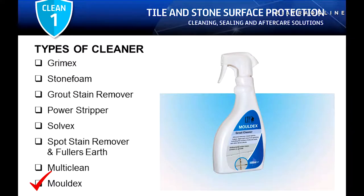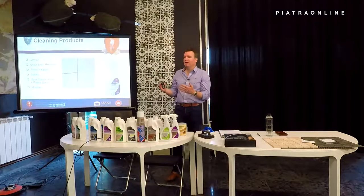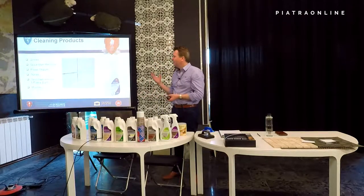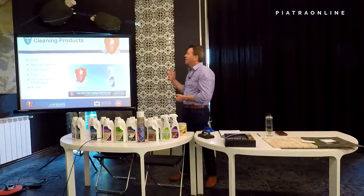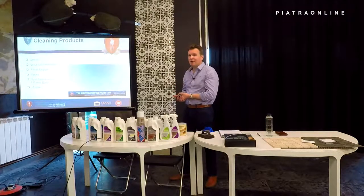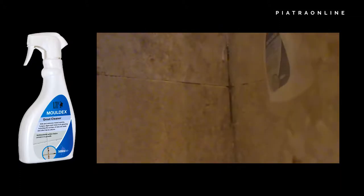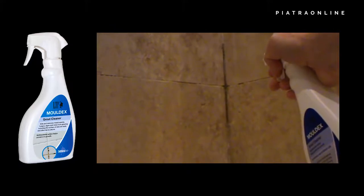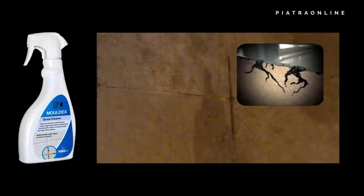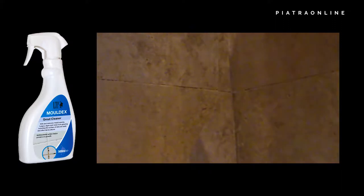Mold X addresses a common issue in the UK — if you've got poor ventilation in a bathroom with natural stone or travertine, you can get mold and mildew growing in the grout joints. There's a video demonstrating how to use Mold X in a natural stone bathroom. The product has two settings: a spray setting and a jet setting. You can see the mold gathered in the corner of the shower — you spray it on and leave it for about 20 to 30 minutes to allow the solution to absorb.